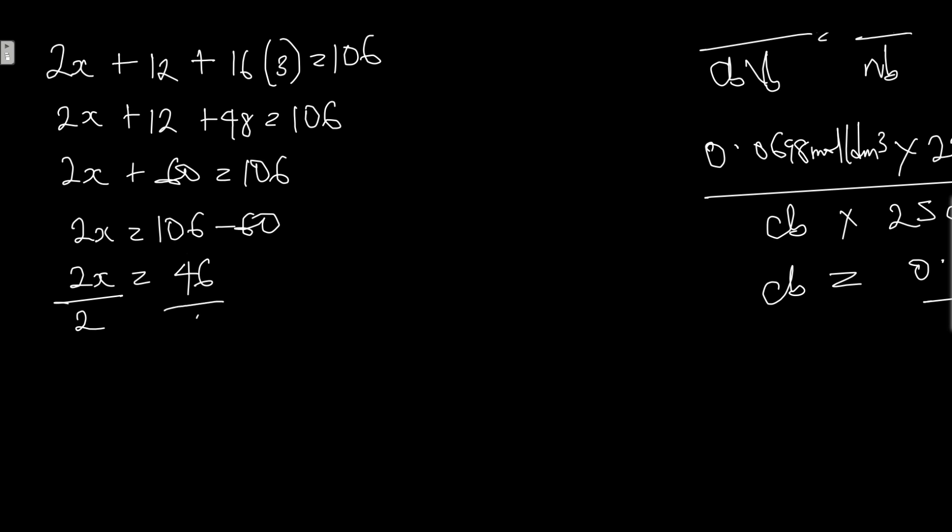Divide both sides by 2, you have X equals 23. This 23 is the mass of sodium, so we know that X is sodium. The formula becomes Na₂CO₃.